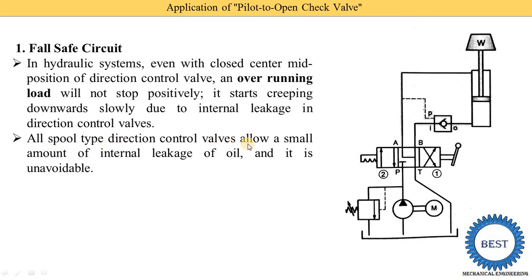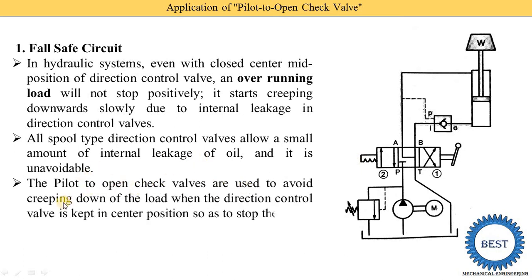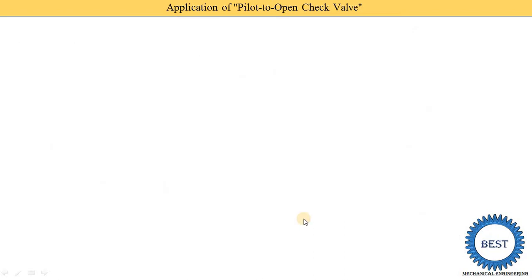All spool-type directional control valves allow a small amount of internal leakage of oil, and it is unavoidable. The pilot-to-open check valves are used to avoid creeping down of the load when the directional valve is kept in the center position so as to stop the load — meaning we need to sustain the load at a certain desired position. Now we move towards the detailed working.